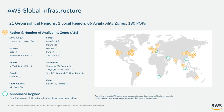Those availability zones are separated by a meaningful distance and protected against any kind of joint failures. In addition to the current regions and availability zones, AWS is continuing to expand. We have announced four additional regions and 12 additional availability zones that we plan to deploy.